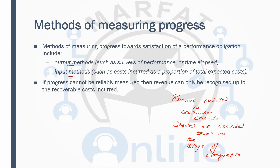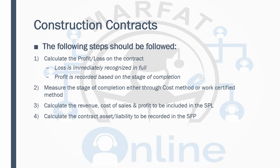Whenever you have a construction contract question in the exam — tested both in objective test questions and final account adjustments — remember these steps. First, calculate whether the contract is generating profit or loss. If the contract is generating a loss, the loss should be immediately recognized in full considering the prudence concept. If there is a profit, it is recognized based on the stage of completion — you cannot record the profit immediately, but the loss is immediately recognized.